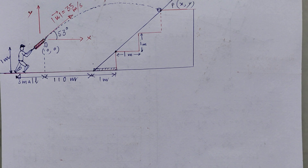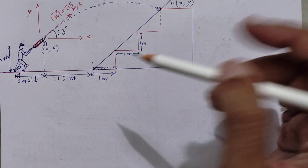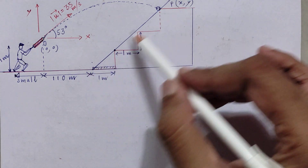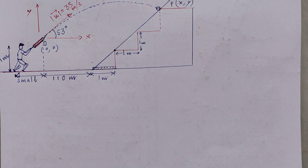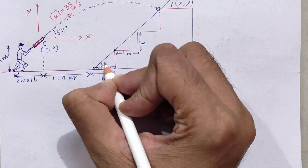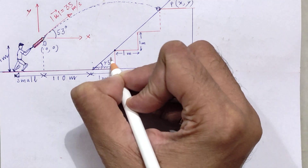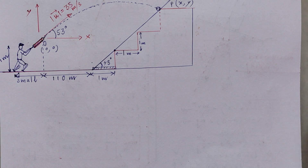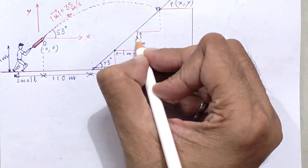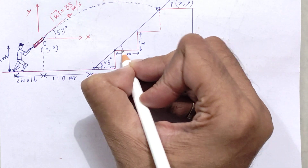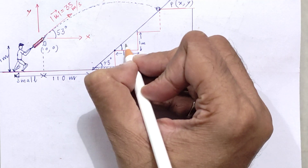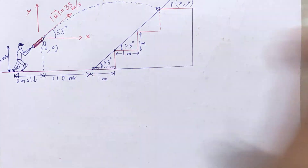First and foremost, I have drawn a tangent connecting the edges of the steps. Looking at this tangent, we can conclude that this angle must be 45 degrees. Why? Because each step is one meter wide and one meter tall. So tan θ = perpendicular / base = 1/1 = 1, which means θ = 45 degrees.